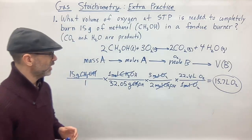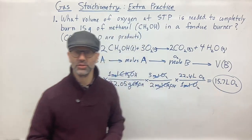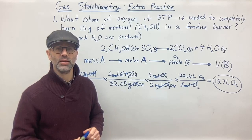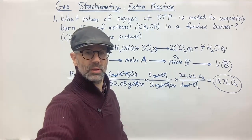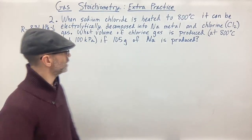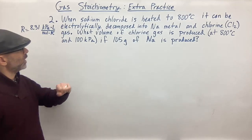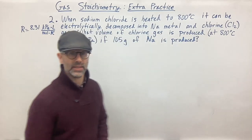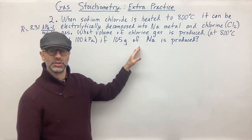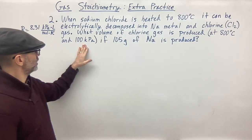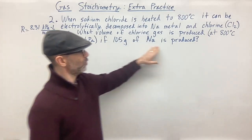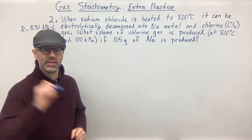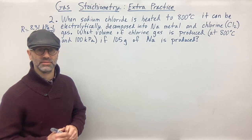Hopefully that's what you got. If you used PV = nRT and got the same answer, that's fine too. So that's extra practice problem number one. Next is number two. When sodium chloride is heated to 800°C, it can be electrolytically decomposed into sodium metal and chlorine gas. What volume of chlorine gas is produced at 800°C and 100 kilopascals if 105 grams of sodium is produced? Once again, we need a balanced equation. Pause the video and try it first.